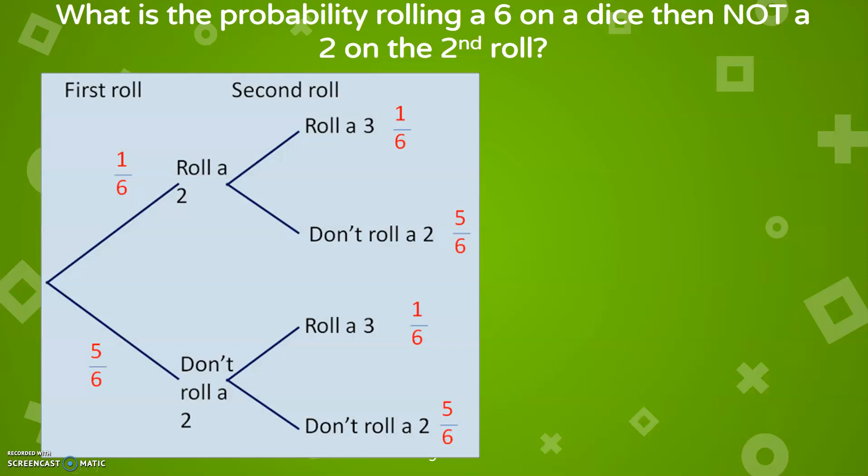So this is a probability tree of will it roll a two on the second dice. Can you roll a six and then roll NOT a two on the second roll? You can see you have one-sixth chance here, one-sixth chance. But you have a five-sixth chance of not rolling it, and a five-sixth chance of not rolling it on the first one.